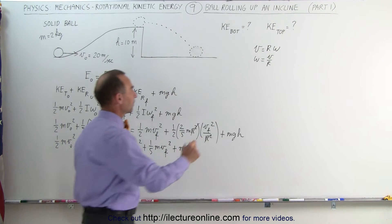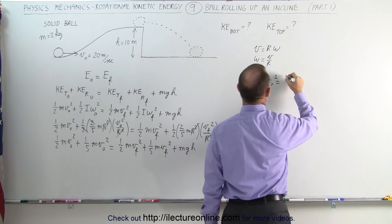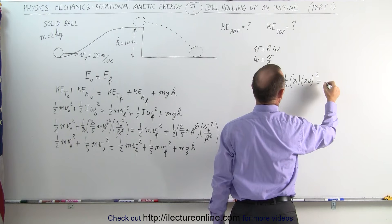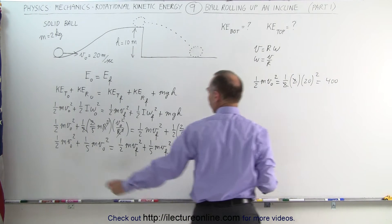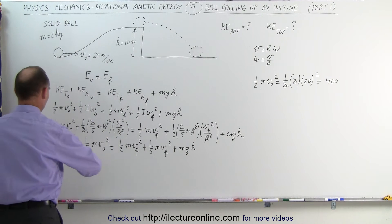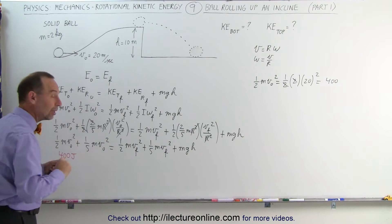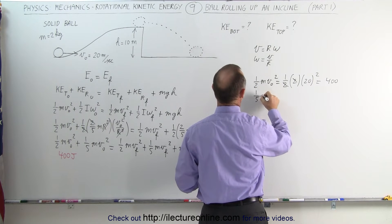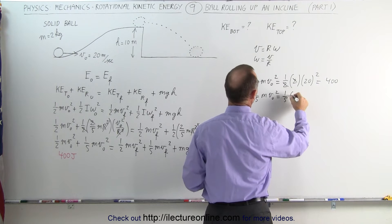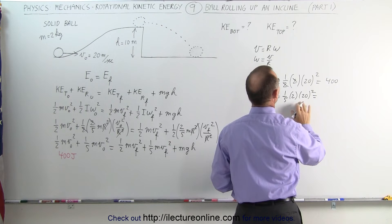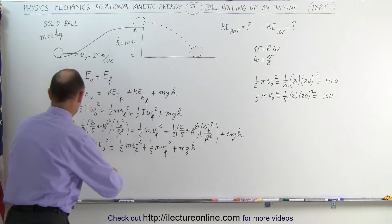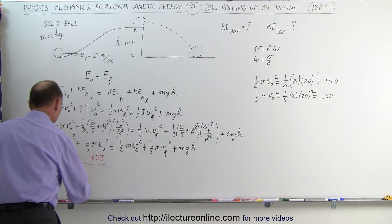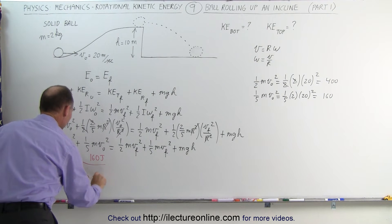Now let's plug in what these energies are. One-half MV initial squared equals one-half times 2 kilograms times 20 meters per second squared — the 2's cancel — 20 squared is 400, so the translational kinetic energy is 400 joules. The rotational kinetic energy is one-fifth MV initial squared, which is one-fifth times 2 times 400, giving 800 divided by 5, which is 160 joules. Combined, the initial kinetic energy of the moving and rotating ball is 560 joules.